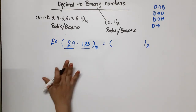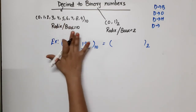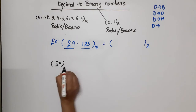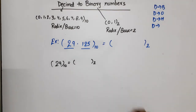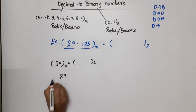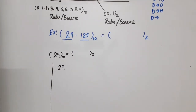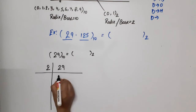First we take the integer part, which is 29. This is a decimal number, base 10. We need to find its binary equivalent. Binary has base 2, so we divide by 2.